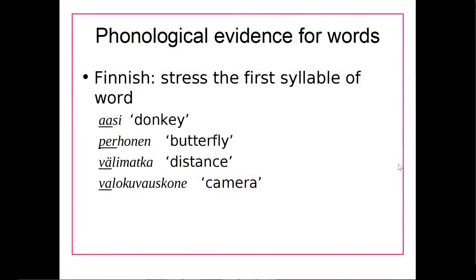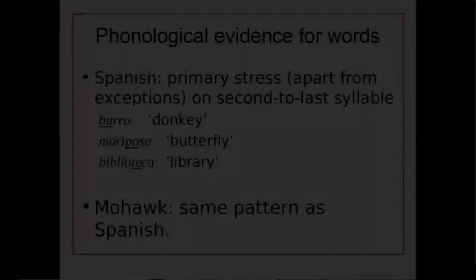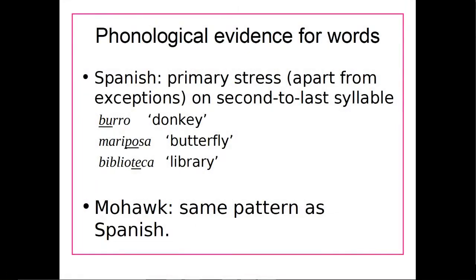In addition to using pausing to identify word boundaries, another way to look at what a word is involves stress patterns. In some languages, there's a pattern of which syllables are stressed in a word. For example, in Finnish, the words for 'donkey' (assi), 'butterfly' (perhonan), and 'distance' (valematka) each have their first syllable stressed, because in Finnish stress is always on the first syllable. So if you hear stress in Finnish, you can tell where a word begins. Similarly in Spanish, the primary stress is usually on the second-to-last syllable, so if you hear stress in Spanish, you can have a pretty good idea of where word boundaries are.